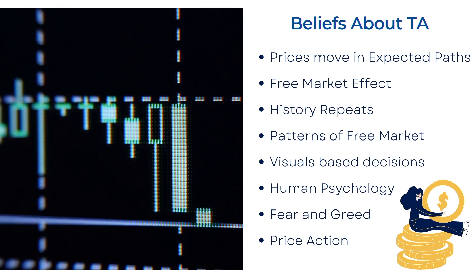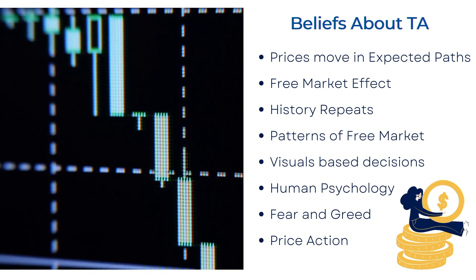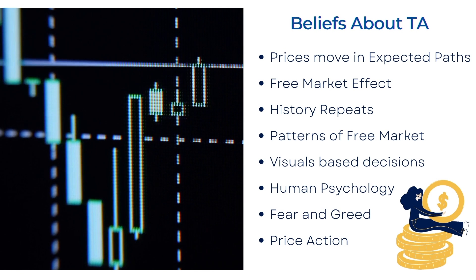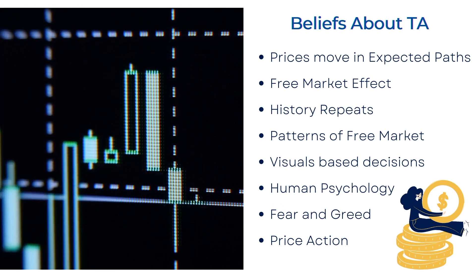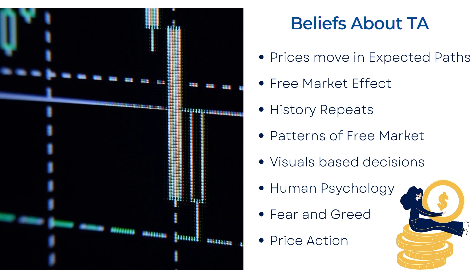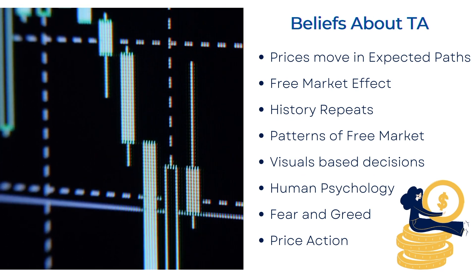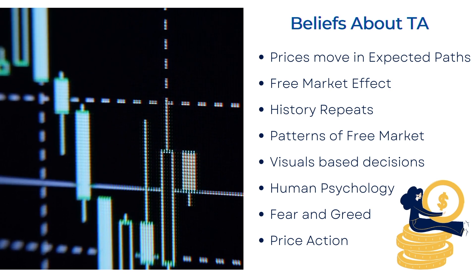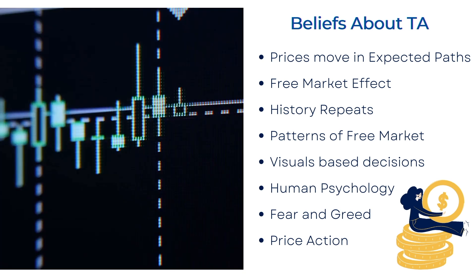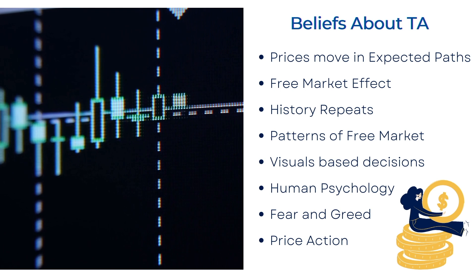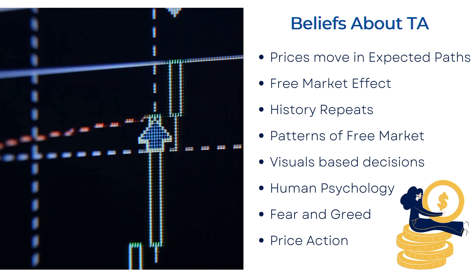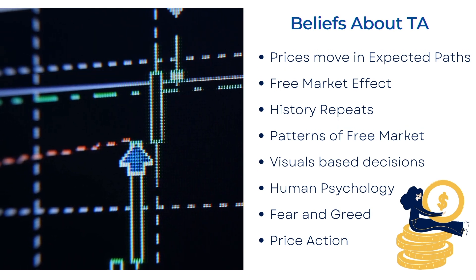Now let us see the beliefs about technical analysis. Some assumptions include: prices move in expected paths, which is the price direction. As it is a free market, prices move in a predictable direction. A free market is where prices are determined by competition between privately owned businesses without restrictions. This price movement is continuous until interrupted. Therefore, we believe history repeats — the movement is similar to the average of movements in the past, and similar patterns of the free market also repeat.